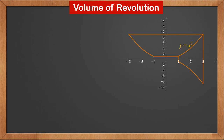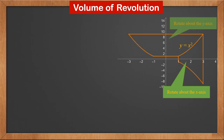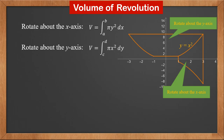We already saw how the curve rotates about the x-axis. We can also rotate it about the y-axis. Here's the curve y equals x squared between x equals 1 and 3. When it's rotated about the x-axis, the volume is the integral of pi y squared dx for x between a and b. When it's rotated about the y-axis, the volume is the integral of pi x squared dy for y between c and d. Note that a and b are the range of x, and c and d are the range of y.